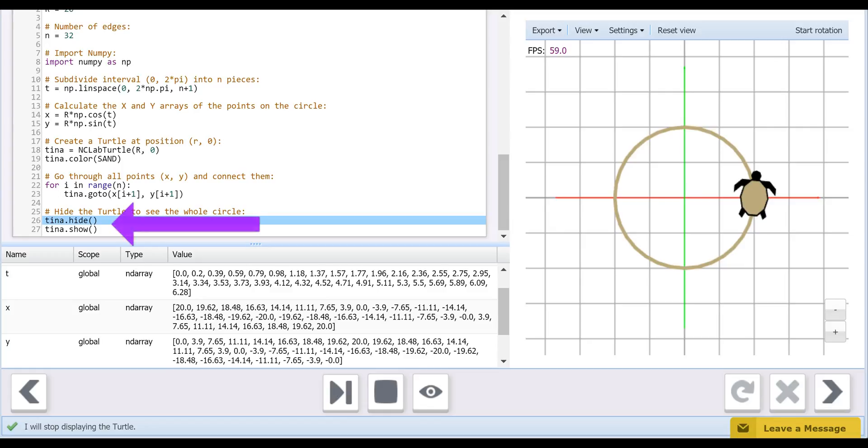Finally, on lines 26 and 27, we use the hide command to hide the turtle icon, then show to display the trace. The n value of 32 produces a visually smooth circle for its radius.